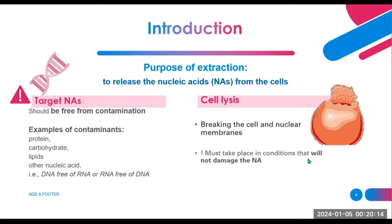The initial step for nucleic acid extraction involves liberating or releasing cellular material by disrupting both the cell and nuclear membranes through a process known as cell lysis. It is crucial to conduct lysis under conditions that are safe enough to maintain the integrity of the nucleic acid — meaning cell lysis must not damage the nucleic acids. Subsequent to lysis, the desired material undergoes purification, after which the sample's concentration and purity can be assessed.